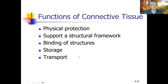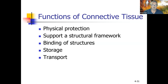Functions of connective tissue: physical protection (e.g., bone), supporting a structural framework like forming the shape of organs, binding structures such as holding bones together via ligaments and tendons, and storage — fat stores energy, bones store calcium and phosphorus needed for nerve communication and blood clotting. Bones act as a reservoir of these chemicals. Transport is almost entirely through blood, transporting oxygen, food, and wastes.